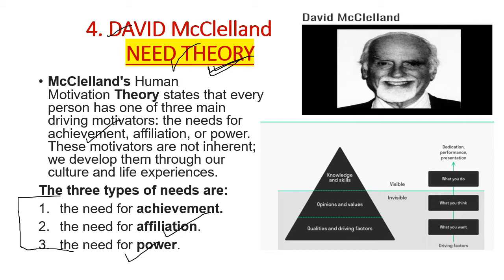These motivators are not inherent — we develop them through our culture and life experiences. Achievement is related to knowledge and skills; affiliation is related to opinions and values; and power is related to qualities and driving factors. If they are visible, you have dedication, performance, and presentation. But if they are invisible, you are confused about what to do, what to think, and what you want. This is called Need Theory.